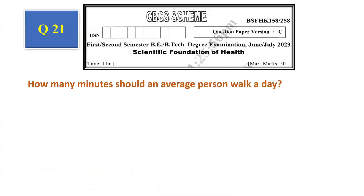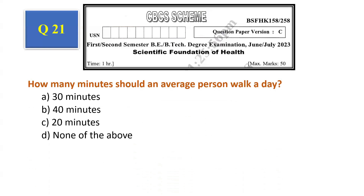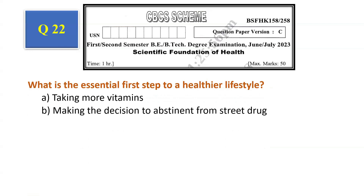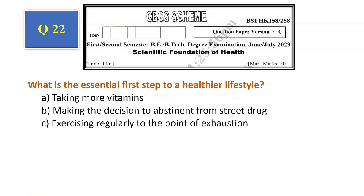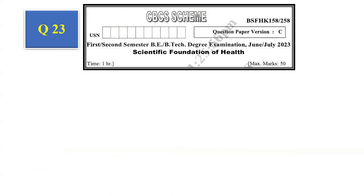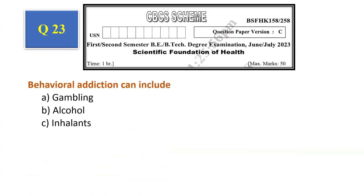Question number 21: How many minutes should an average person walk a day? Options: 30 minutes, 40 minutes, 20 minutes, none of the above. The answer is 30 minutes, that is option A. Question number 22: What is the essential first step to a healthier lifestyle? Taking more vitamins, making the decision to abstain from street drugs, exercising regularly to the point of exhaustion, none of the above. The answer is making the decision to abstain from street drugs, that is option B.